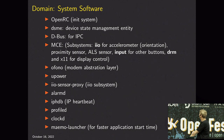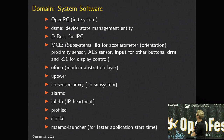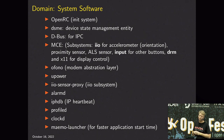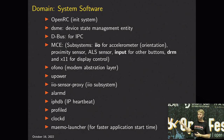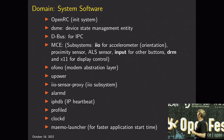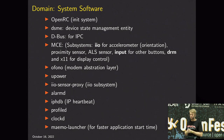Then there's IPHBD - IP Heartbeat Daemon - used to save power. If you have many programs using the internet at different times, the network radio will be constantly active. But if you synchronize when they use the internet so they all use it at the same time, you can conserve power. IPHBD is an interface that applications can optionally support to save power. We integrated this only last week and it's been saving power.